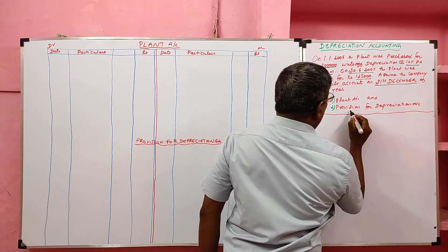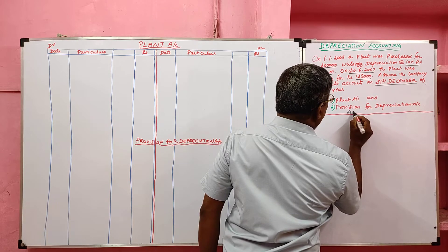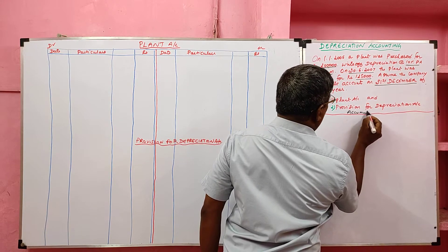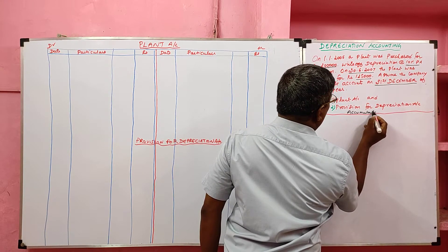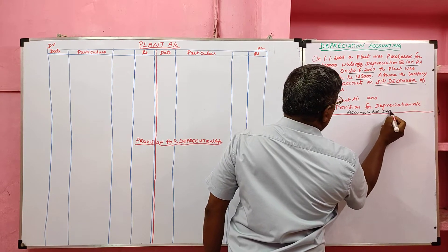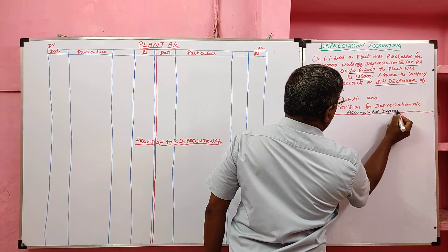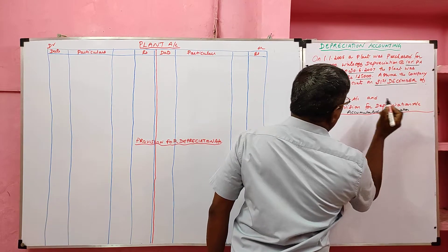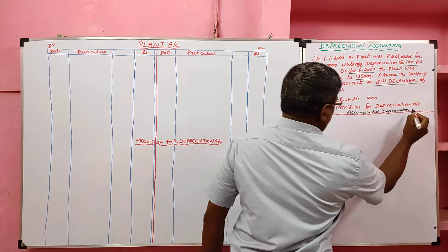The provision for depreciation account is also called the accumulated depreciation account.